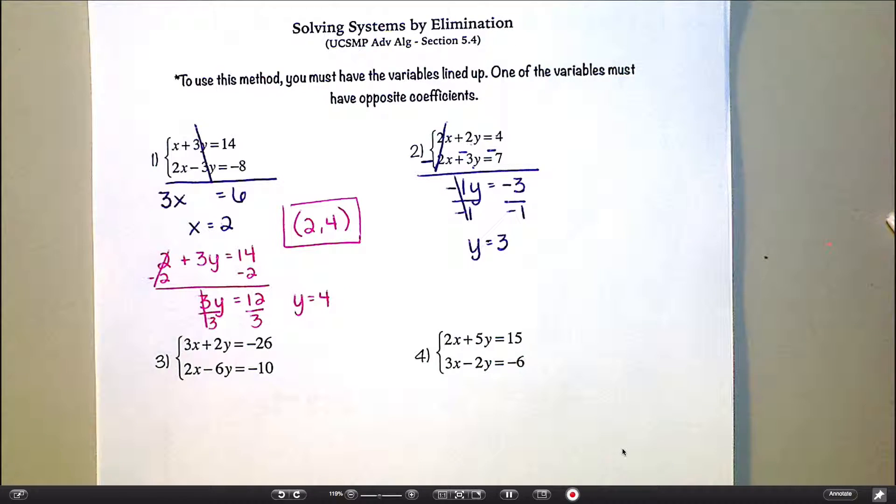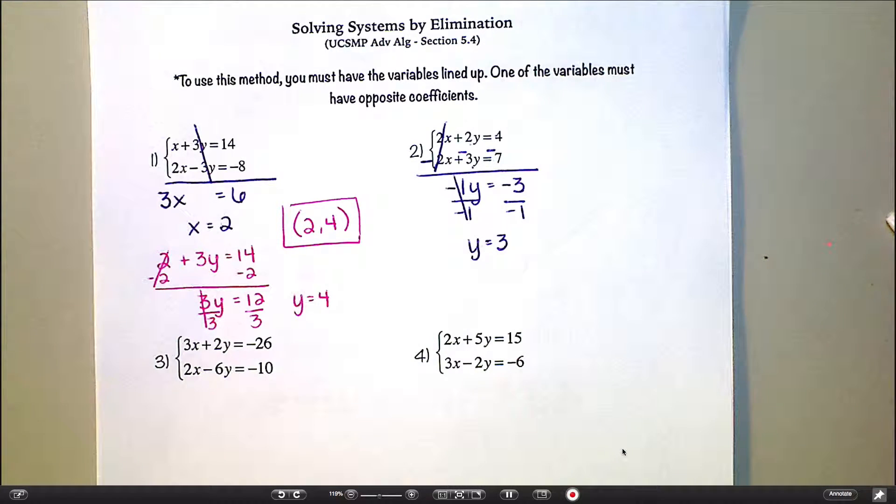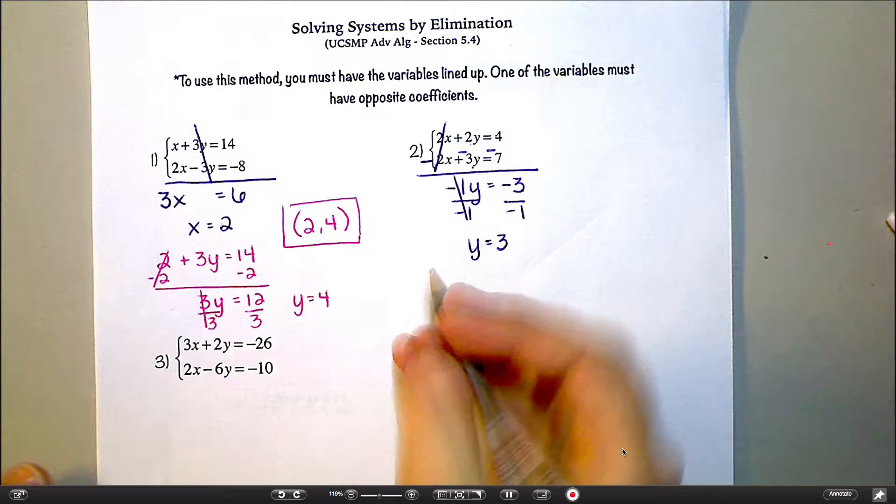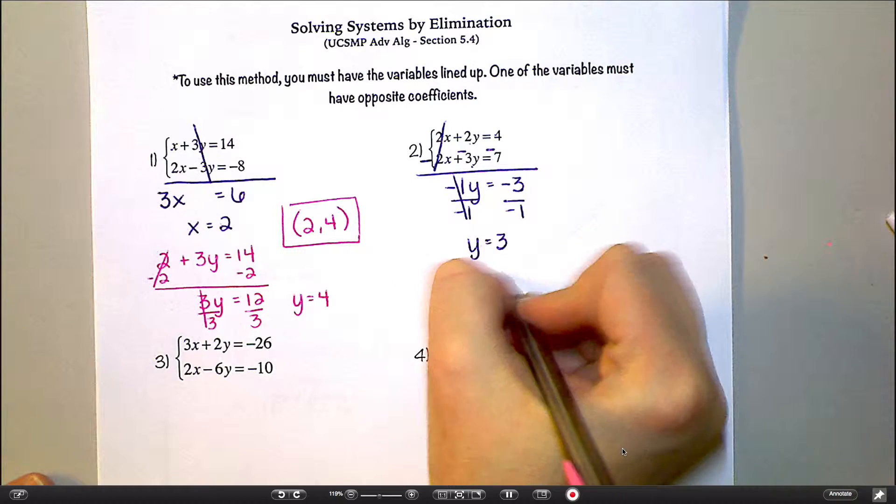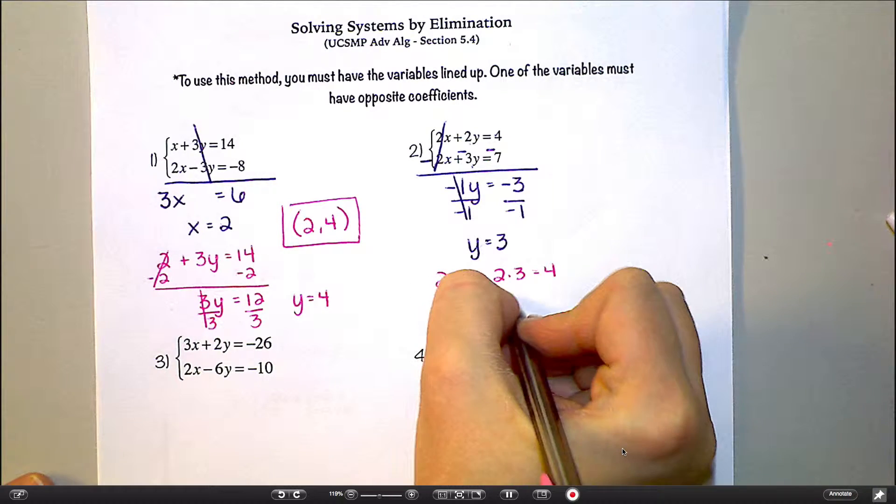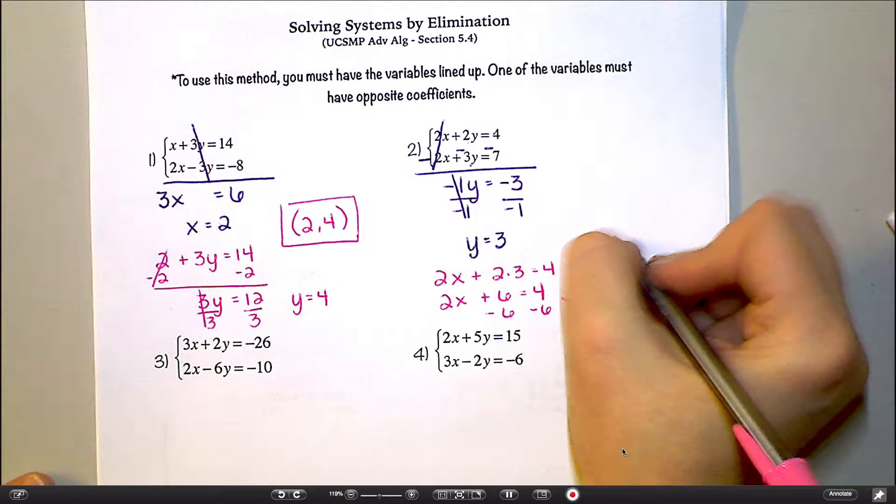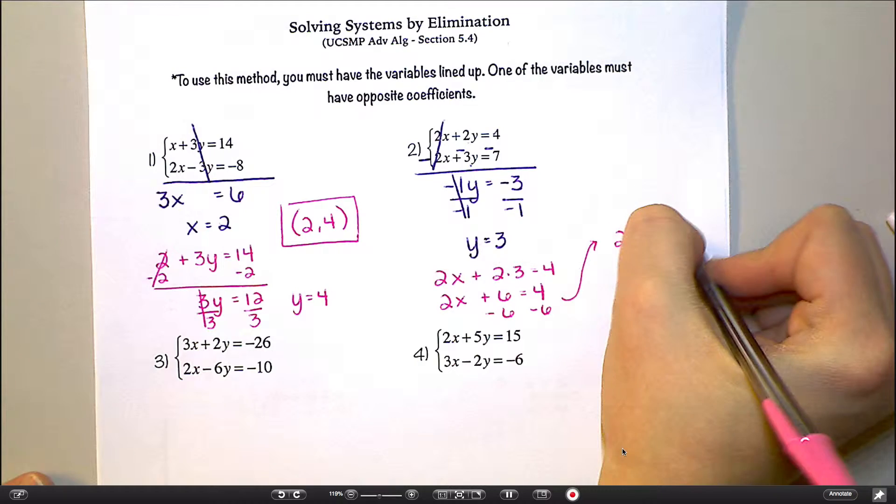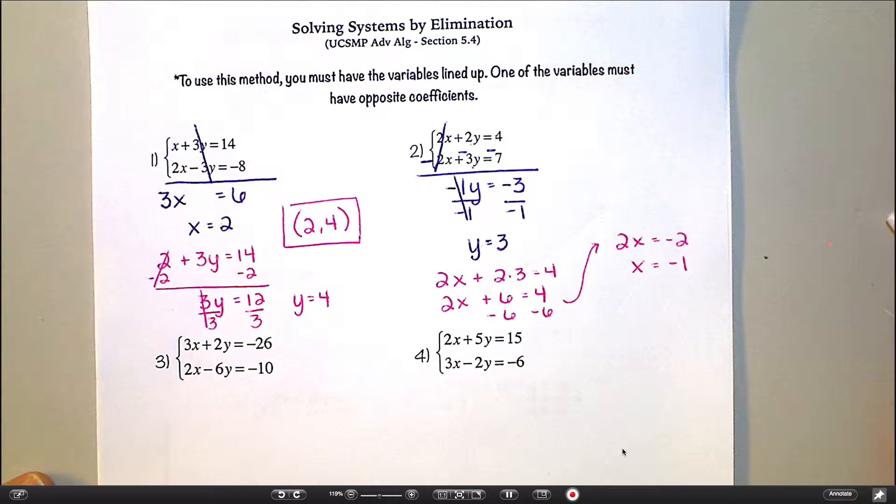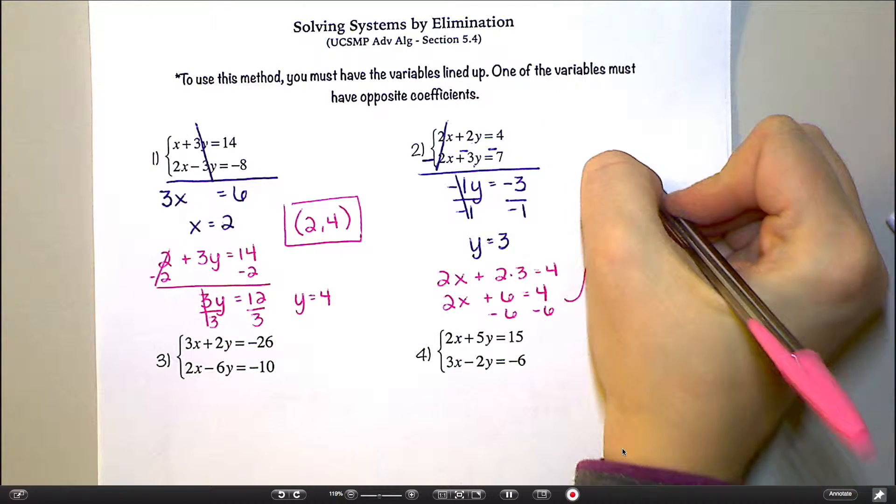And now when I go to plug back in, I can plug into either of the originals, or if I really wanted to, I could plug into that new one I made with all the negatives. What do you feel like? Top one maybe? Yeah. Okay. So I would say 2x plus 2 times 3 equals 4. So that's really 2x plus 6 equals 4. 4 minus 6 minus 6. I get 2x equals negative 2. So x equals negative 1. I'm not moving too fast on that for you, am I? I mean, maybe for you to write it down, but you're understanding that part, right? So, and then coordinate would be negative 1 comma 3.